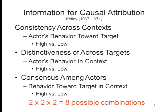The second is distinctiveness — the distinctiveness of the actor's behavior across targets, holding context constant. High distinctiveness means the actor behaves differently toward this particular target compared to others; low distinctiveness means the actor behaves toward all targets the same way. The third is consensus — the consensus of multiple actors toward a single target. High consensus means everybody behaves the same way toward the target in that context; low consensus means there's a lot of variability across actors.